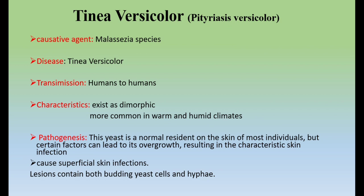The causative agent Malassezia has key characteristics. First, it exists as dimorphic, meaning it can exist in the form of yeast. It is more commonly present in warm and humid climates. Its pathogenesis: the yeast is normally present on the skin of most individuals, but certain factors such as being immunocompromised or living in warm and humid climates can lead to overgrowth of this organism, resulting in superficial skin infections. It contains both budding yeast cells and hyphae because it is dimorphic.